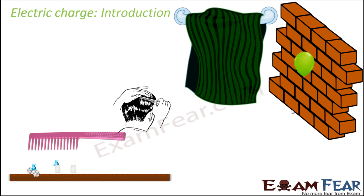In both of these cases, there is nothing which can actually make the objects attract each other — there was nothing between the wall and the balloon, and sometime back they were not sticking. But after being rubbed on a towel or on hair, the balloon sticks to the wall. Similarly, the plastic comb was not attracting bits of paper before, but once combed through dry hair it attracts pieces of paper. So what is the magic behind this attraction? Here comes the concept of electric charge — these objects get electrically charged by rubbing, and that is what causes the attraction.